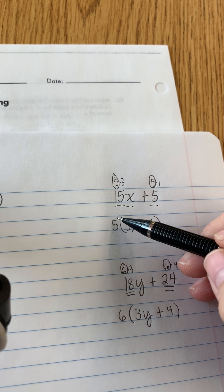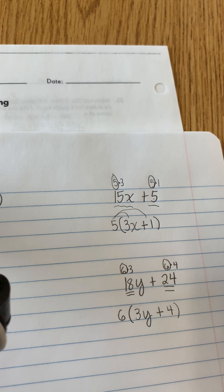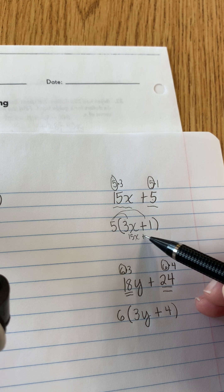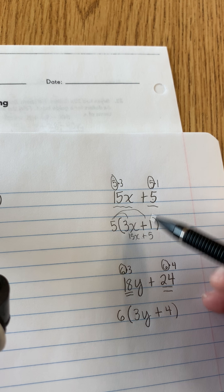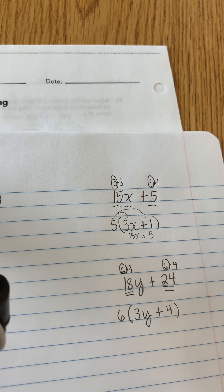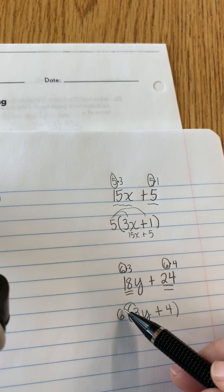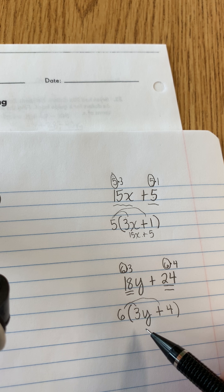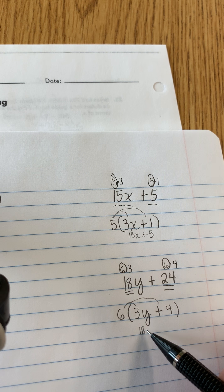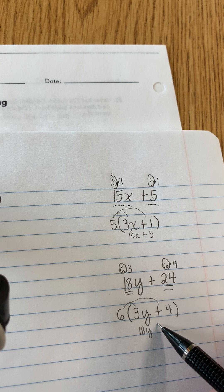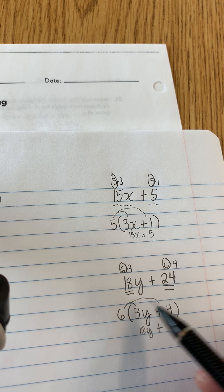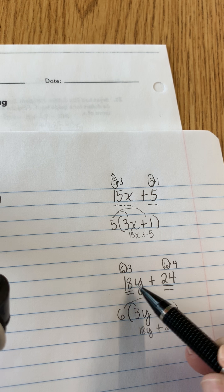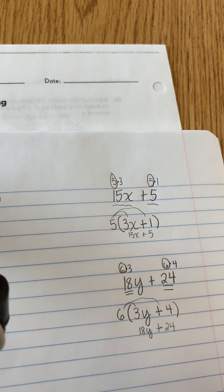You can always distribute and check. So 5 times 3x is 15x plus 5 times 1 is 5. That matches so we did it correctly. You can distribute to see if you did it correctly. 6 times 3y is 18y, so 6 times 3y is 18y plus 6 times 4 is 24. And then compare. This matches with this so it is correct.